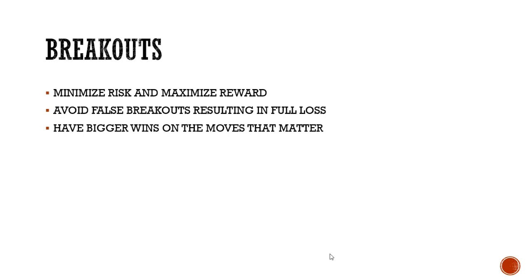When you have 24-hour open markets, there are times with a lot less liquidity and more market manipulation. There are times like New York and London open where breakouts are more consistent, but there are still a lot of fakeouts. When you break your trade into two or three entries and minimize your risk on each — say risking 1.5% each instead of 3% — if it doesn't go in your favor you only lose half of what you'd normally risk.